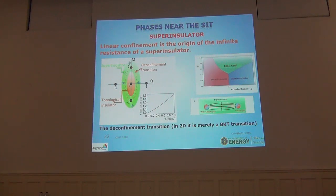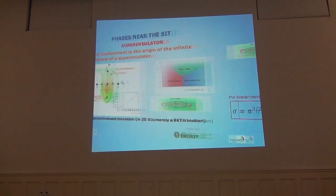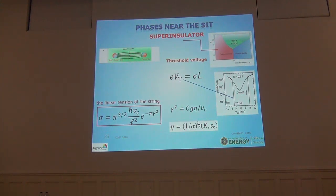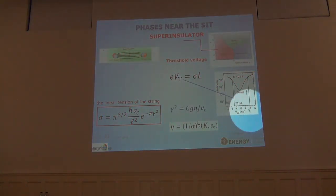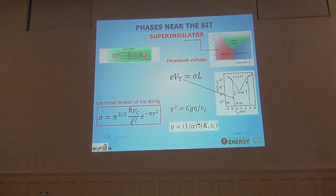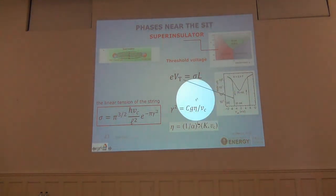We can calculate the critical behavior near deconfinement and find that in one dimension this deconfinement critical behavior is absolutely identical to Berezinskii-Kosterlitz-Thouless critical behavior — immediately giving us what is observed in experiment and used to identify the superinsulating phase. Furthermore, we can calculate the threshold voltage — the voltage which breaks the string, leading to mechanical deconfinement and jumps in the conductivity or current — which was the experiment that helped us identify this transition. This is the expression for the linear tension of the string.